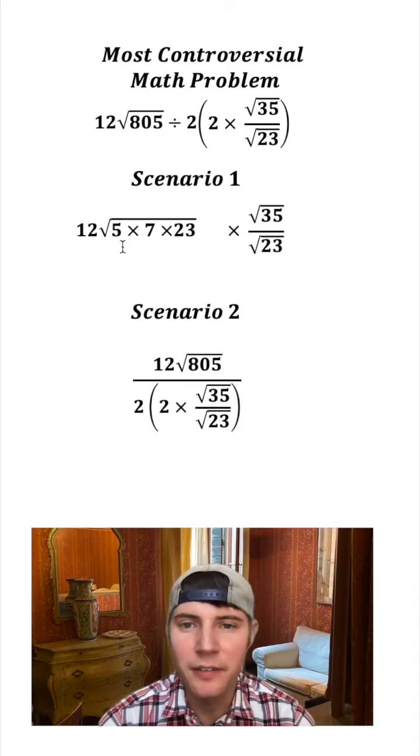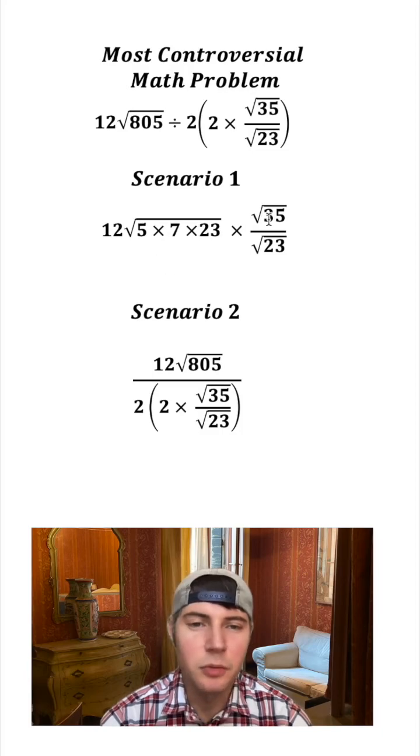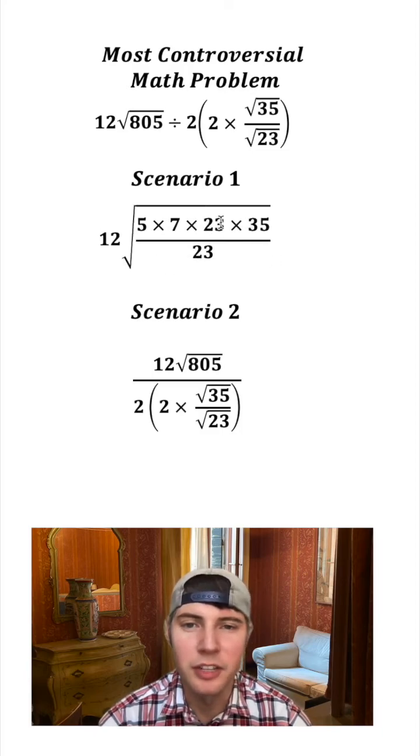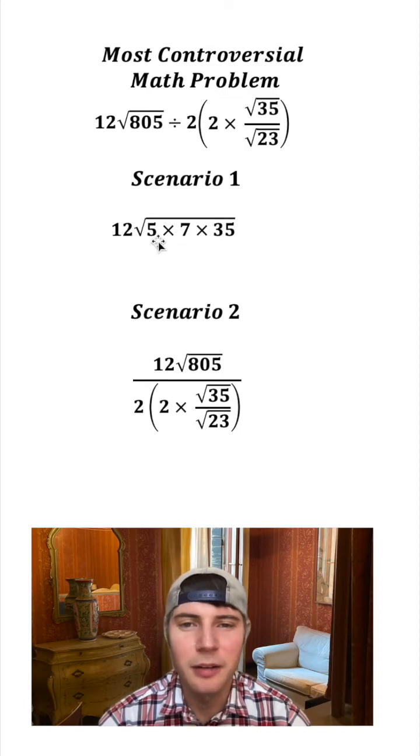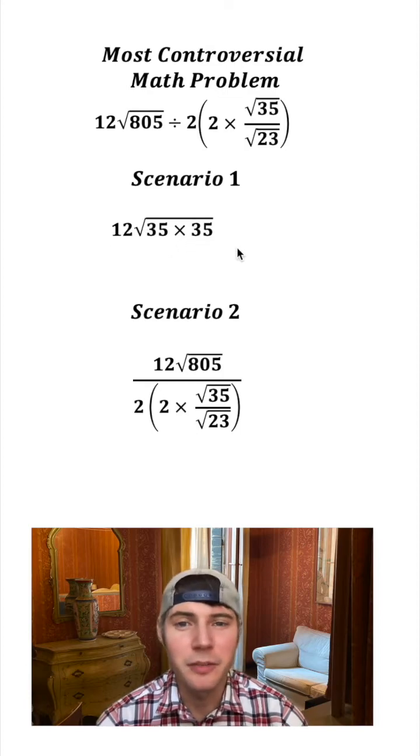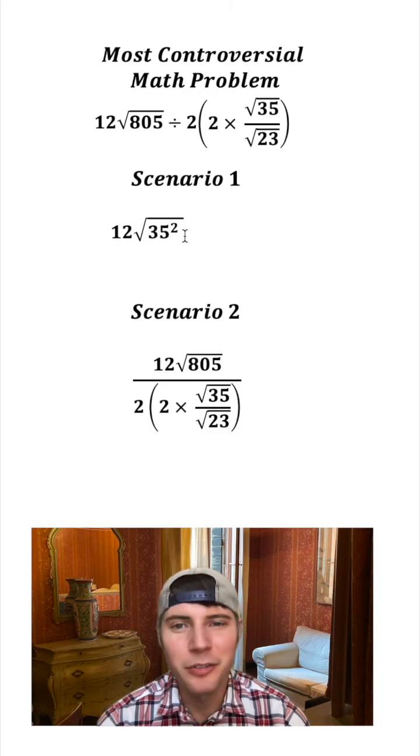And then we can rewrite this 805 as 5 times 7 times 23. This root 35 over root 23 can be brought under this square root. The 23s can cancel each other out. Let's clean it up. 5 times 7 is 35, 35 times 35 is 35 squared. Square root of 35 squared is 35, and 12 times 35 is 420.